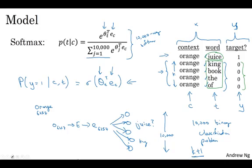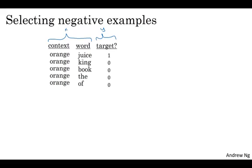Now, before wrapping up, one more important detail of this algorithm is how do you choose the negative examples? So after having chosen the context word orange, how do you sample these words to generate the negative examples? So one thing you could do is sample the words in the middle, the candidate target words. One thing you could do is sample it according to the empirical frequency of words in your corpus. So just sample it according to how often different words appears. But the problem of that is that you end up with a very high representation of words like the, of, and, and so on. One other extreme would be to use one over the vocab size, sample the negative examples uniformly random. But that's also very non-representative of the distribution of English words.